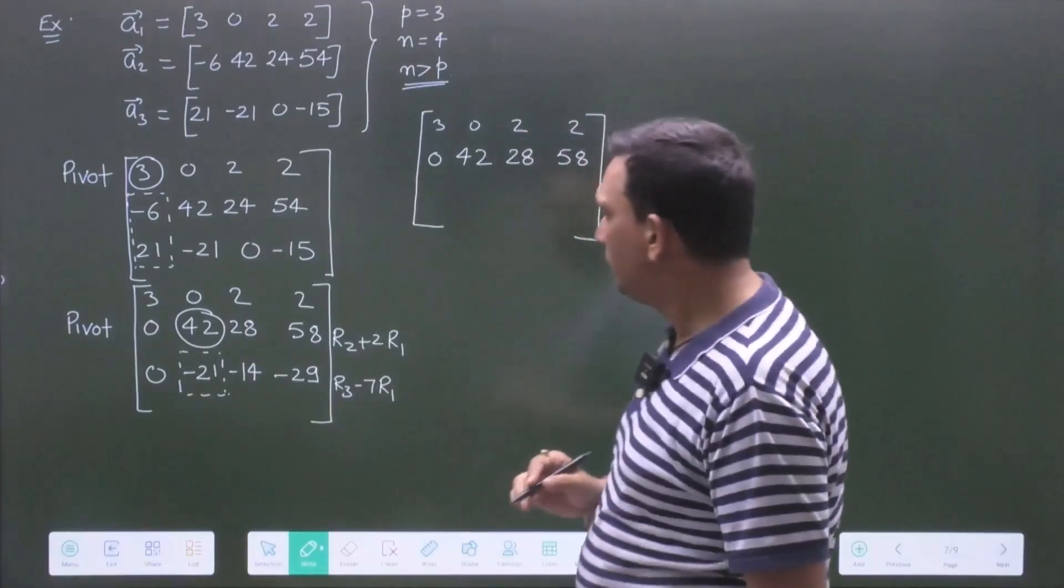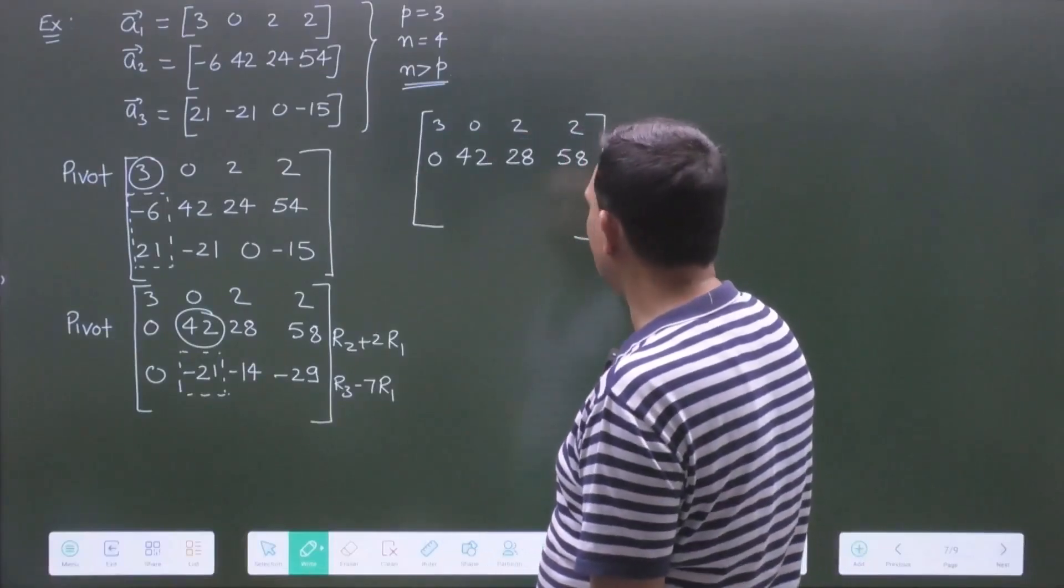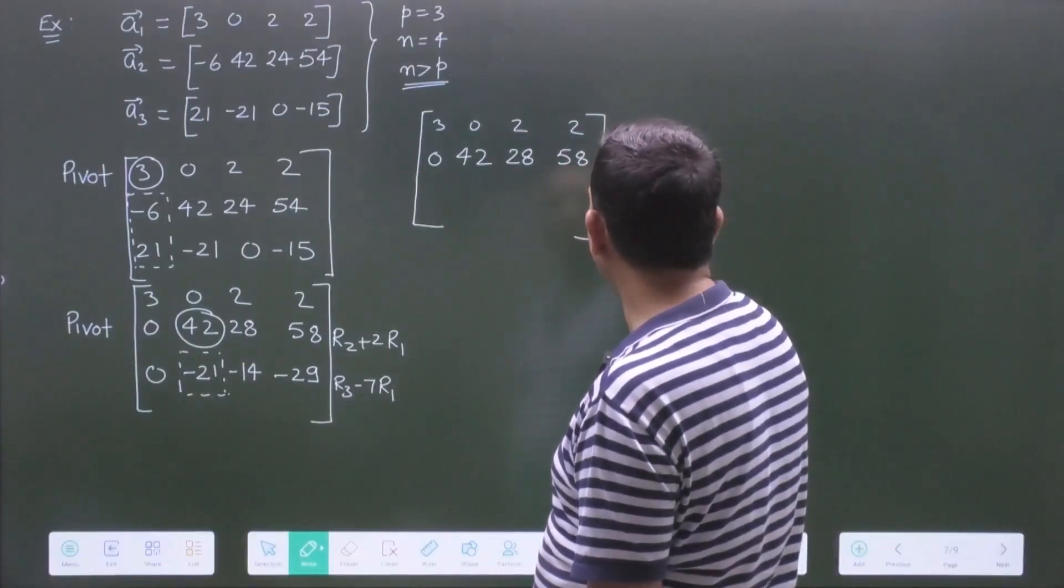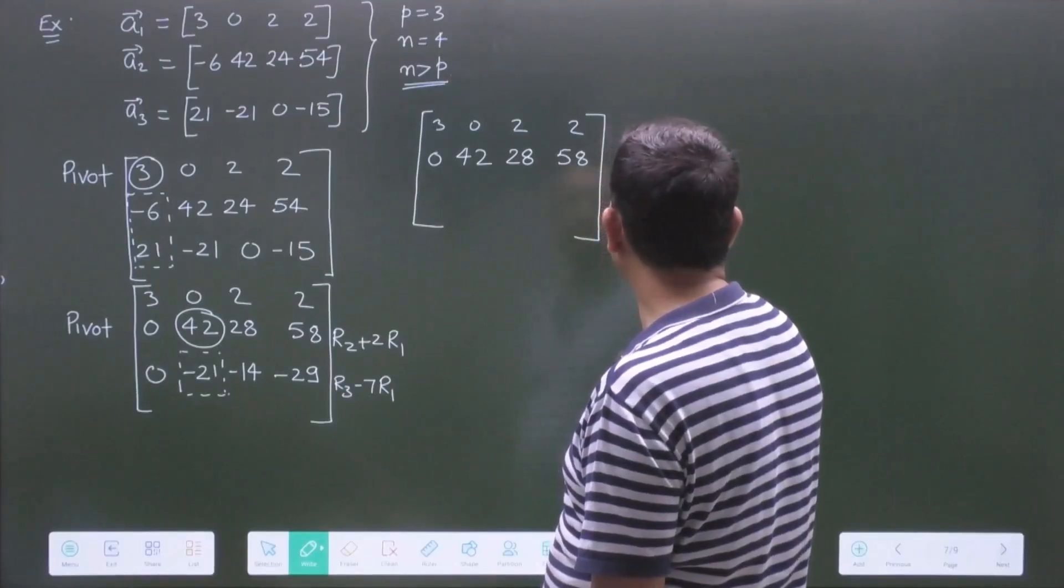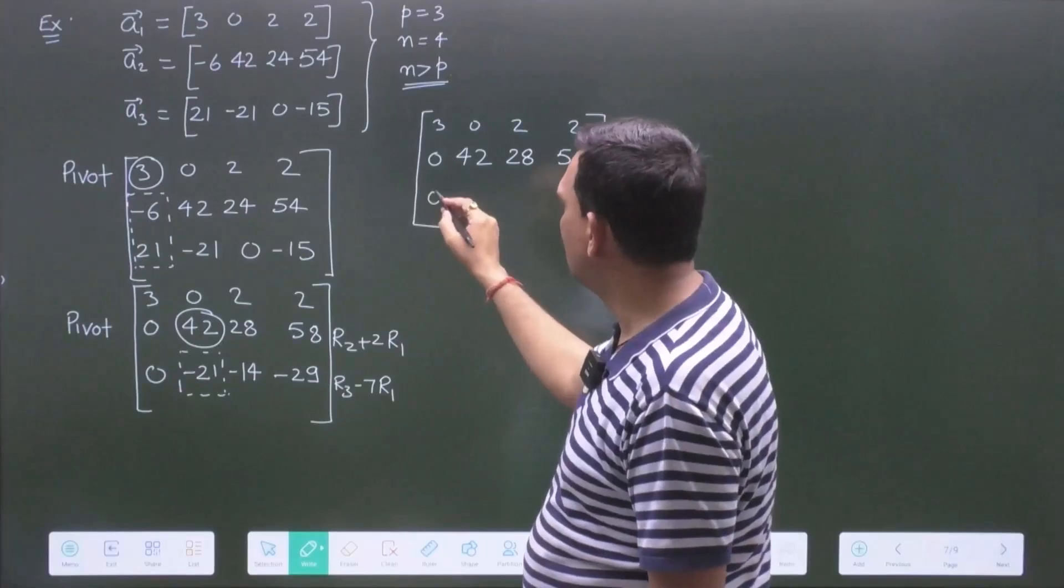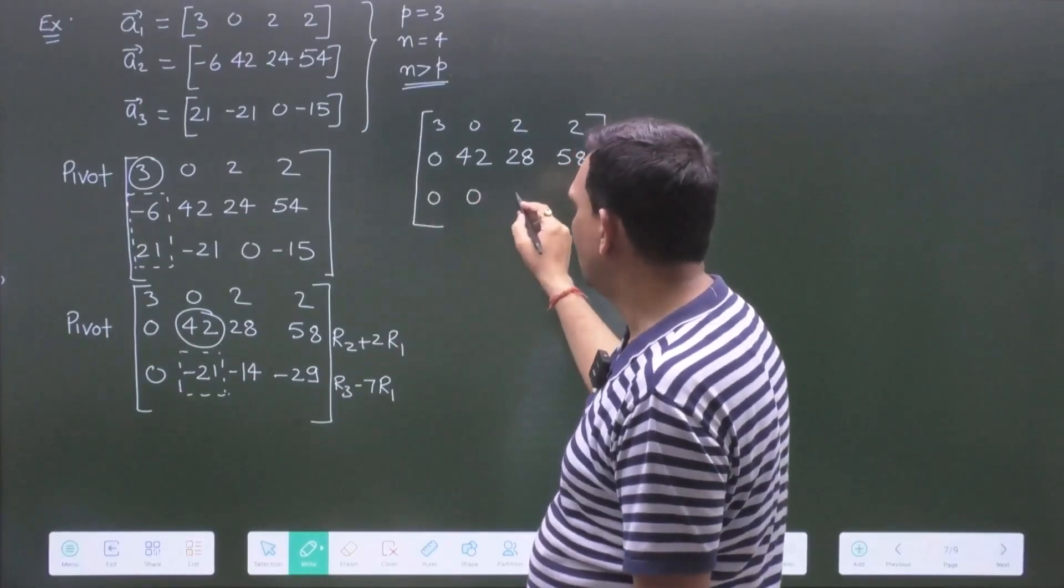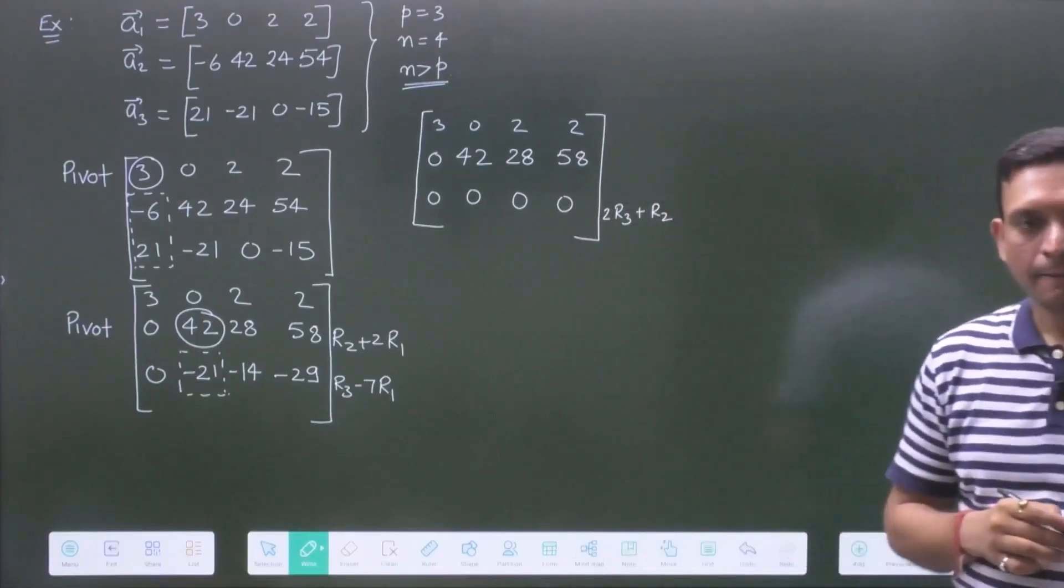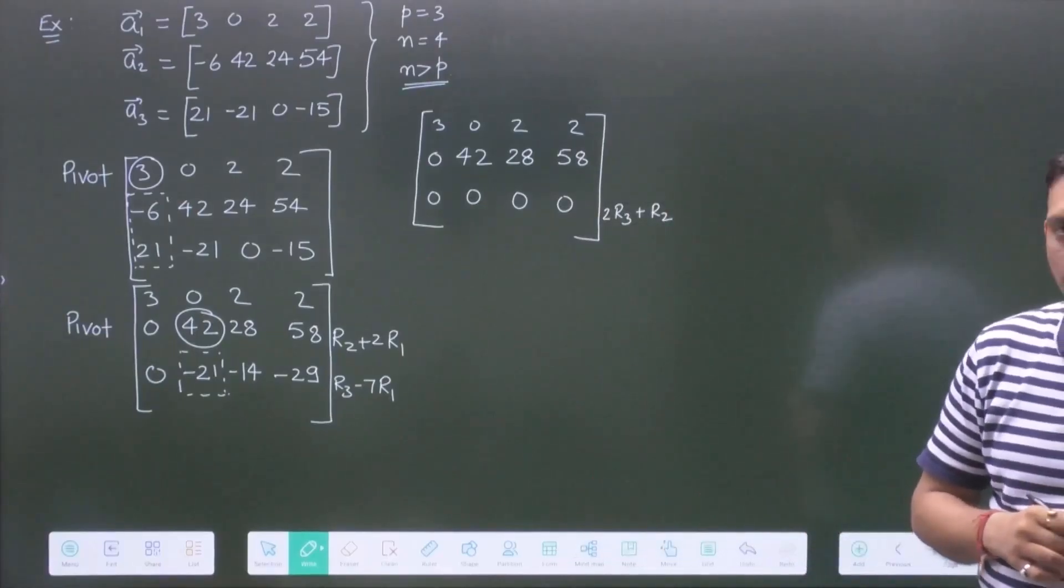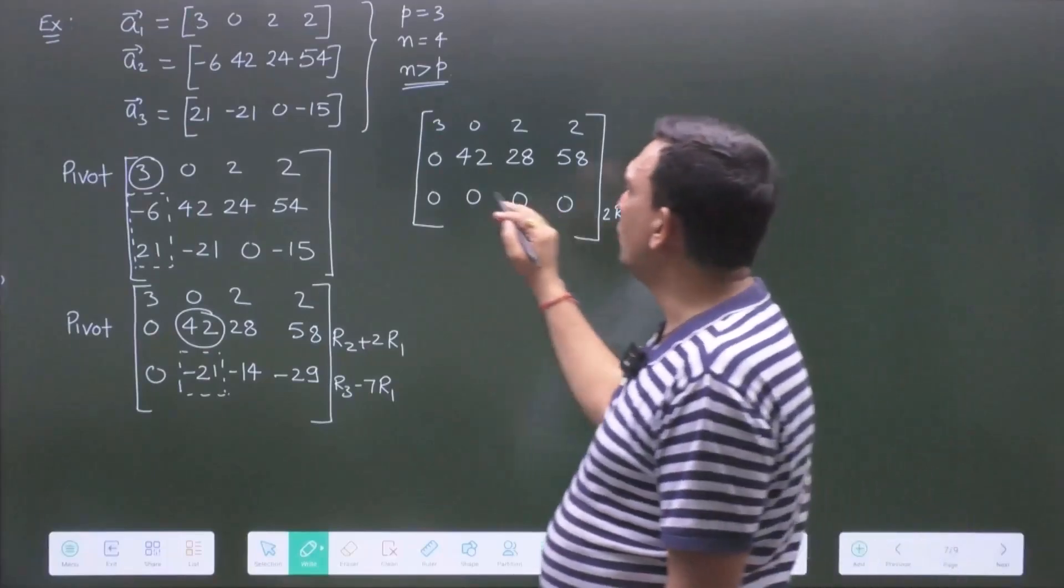Now, you have 2R3 plus R2. So, this is 0, this will be 0, this is 0, this is 0. So, one row is eliminated.